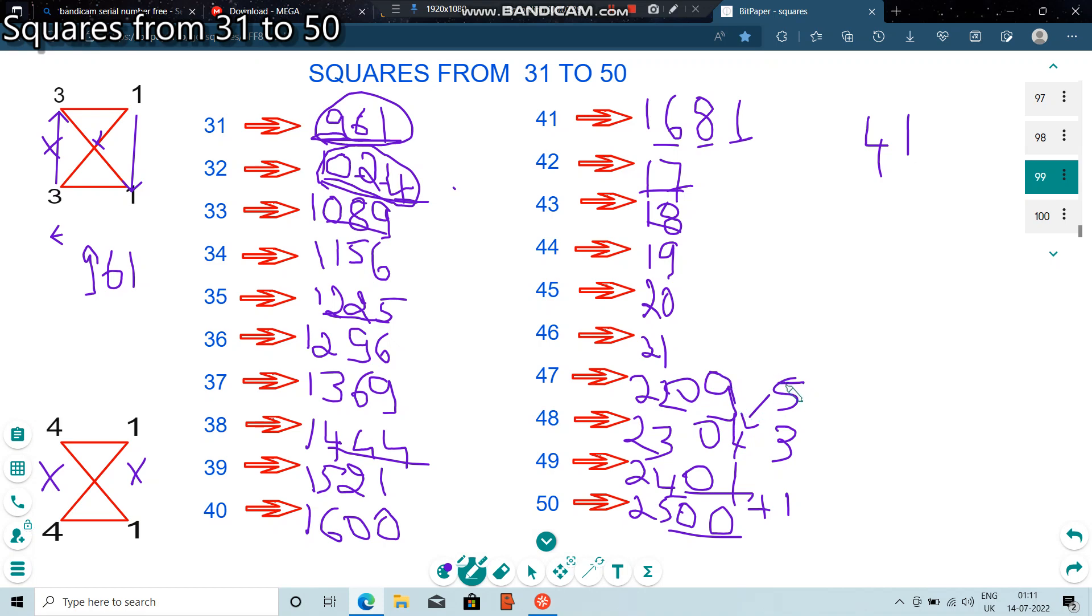So, next we need to add 7 to 9. 7 plus 9 will be 16. Next, we need to add 9 to 16. 9 plus 16 will be 25. Next, we need to add 11 to 25. 25 plus 11 will be 36.